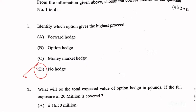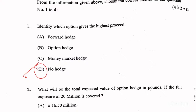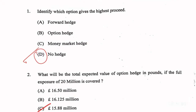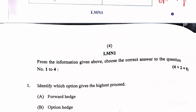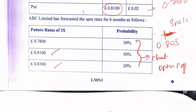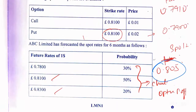For the first question, the answer is D. No hedge will give you the best result because in no hedge you'll get 0.805 as the rate, as compared to other cases where you'll get different rates. This is the first one.